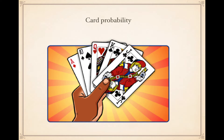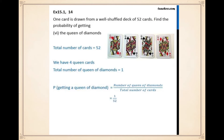Now we're going to look at card probability. There are 52 cards in a deck. First question: one card is drawn from a well-shuffled deck of 52 cards — find the probability of getting the queen of diamonds. The total number of cards is 52, and there is only one queen of diamonds, so we write it as one over 52. That's a very low chance.